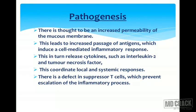Pathogenesis: There is thought to be an increased permeability of the mucous membrane. This leads to increased passage of antigen which induces a cell-mediated inflammatory response. This in turn releases cytokines such as interleukin-2 and tumor necrosis factor, which coordinate local and systemic responses. There is a defect in suppressor T cells which prevents escalation of the inflammatory process.